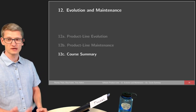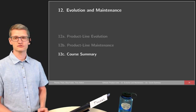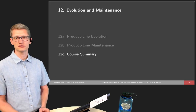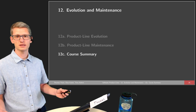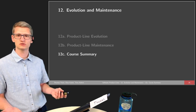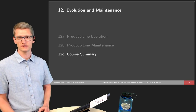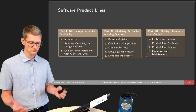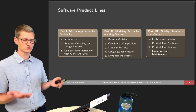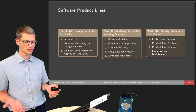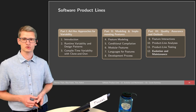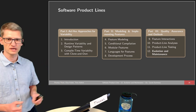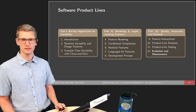Welcome everyone to the last lecture — the last part of the last lecture of our product line course. In this part, I would like to give you a brief recap of all the different topics that we talked about, but also how they are connected. Overall, we talked about ad hoc approaches to variability, how to model and implement features, quality assurance, and in this very lecture, evolution and maintenance.